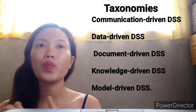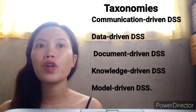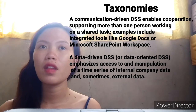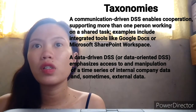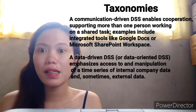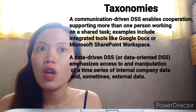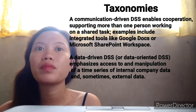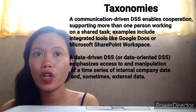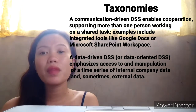The Decision Support System taxonomy includes: communication-driven, data-driven, document-driven, knowledge-driven, and model-driven DSS. A communication-driven DSS enables cooperation, supporting more than one person working on a shared task — examples include integrated tools like Google Docs. A data-driven DSS emphasizes access to and manipulation of a time series of internal company data and sometimes external data.